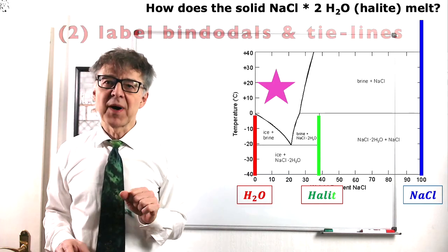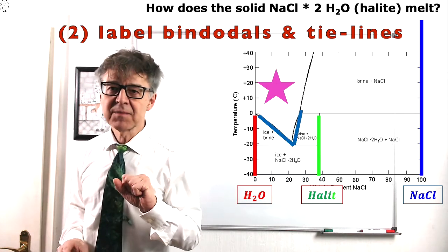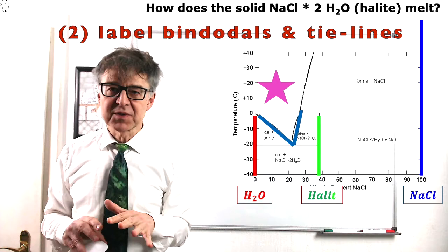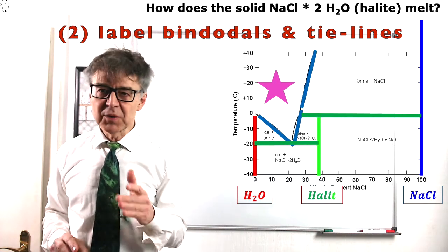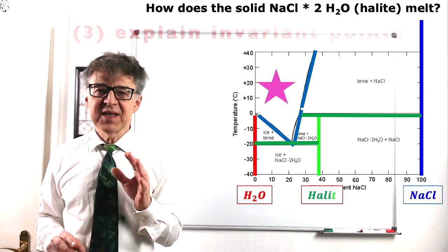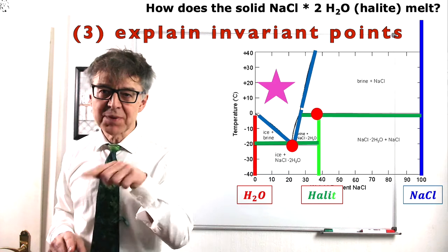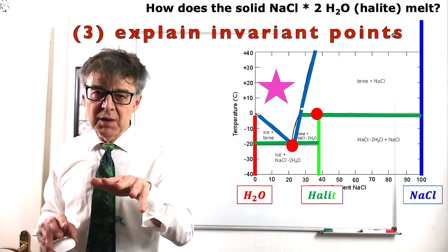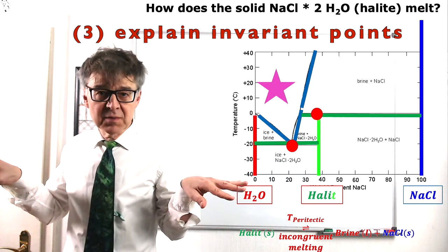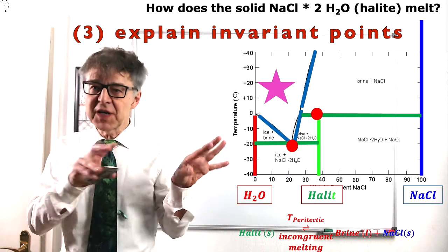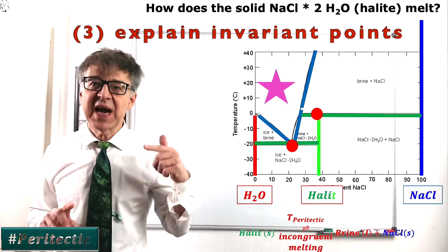We can draw in the binodals, for example, the liquidus lines and two important tie lines. The tie line that describes the decomposition of halide and the tie line that goes through the eutectic. The decomposition of halide at zero degrees Celsius is somewhat equivalent to the behavior of a eutectic melt, but in the opposite way. A homogeneous solid melts on heating into two phases: a heterogeneous mixture of a liquid with a different composition and another solid. This is called a peritectic.